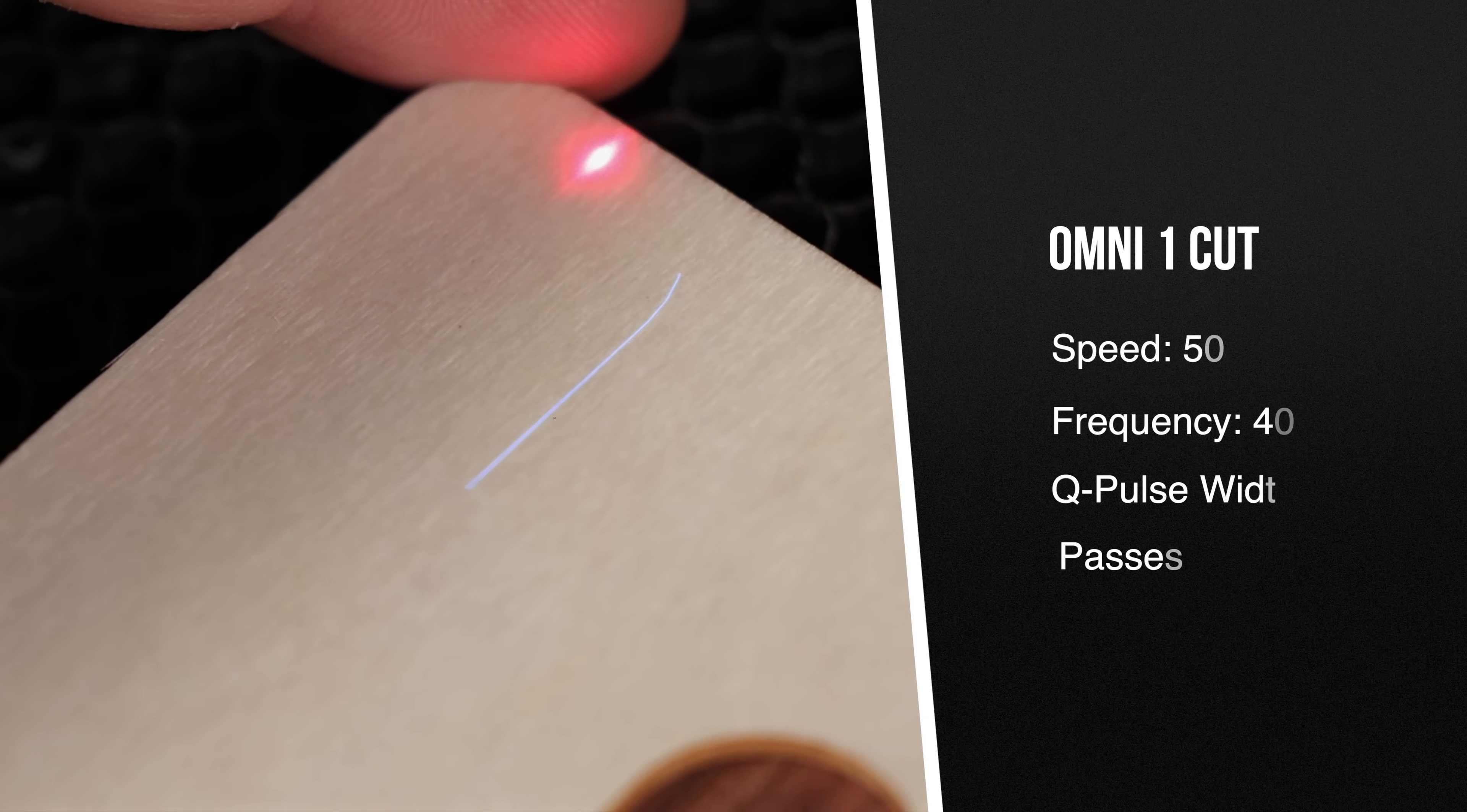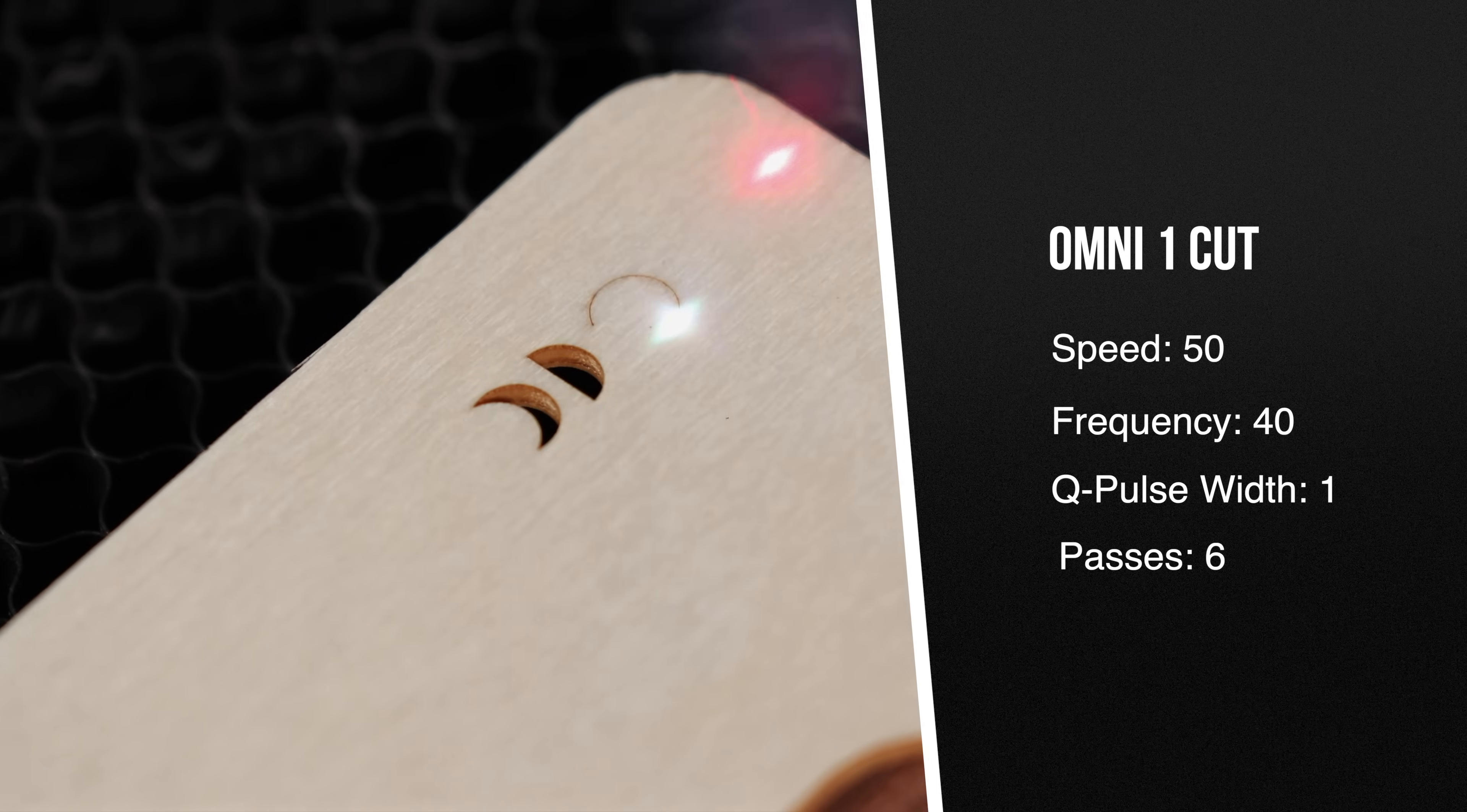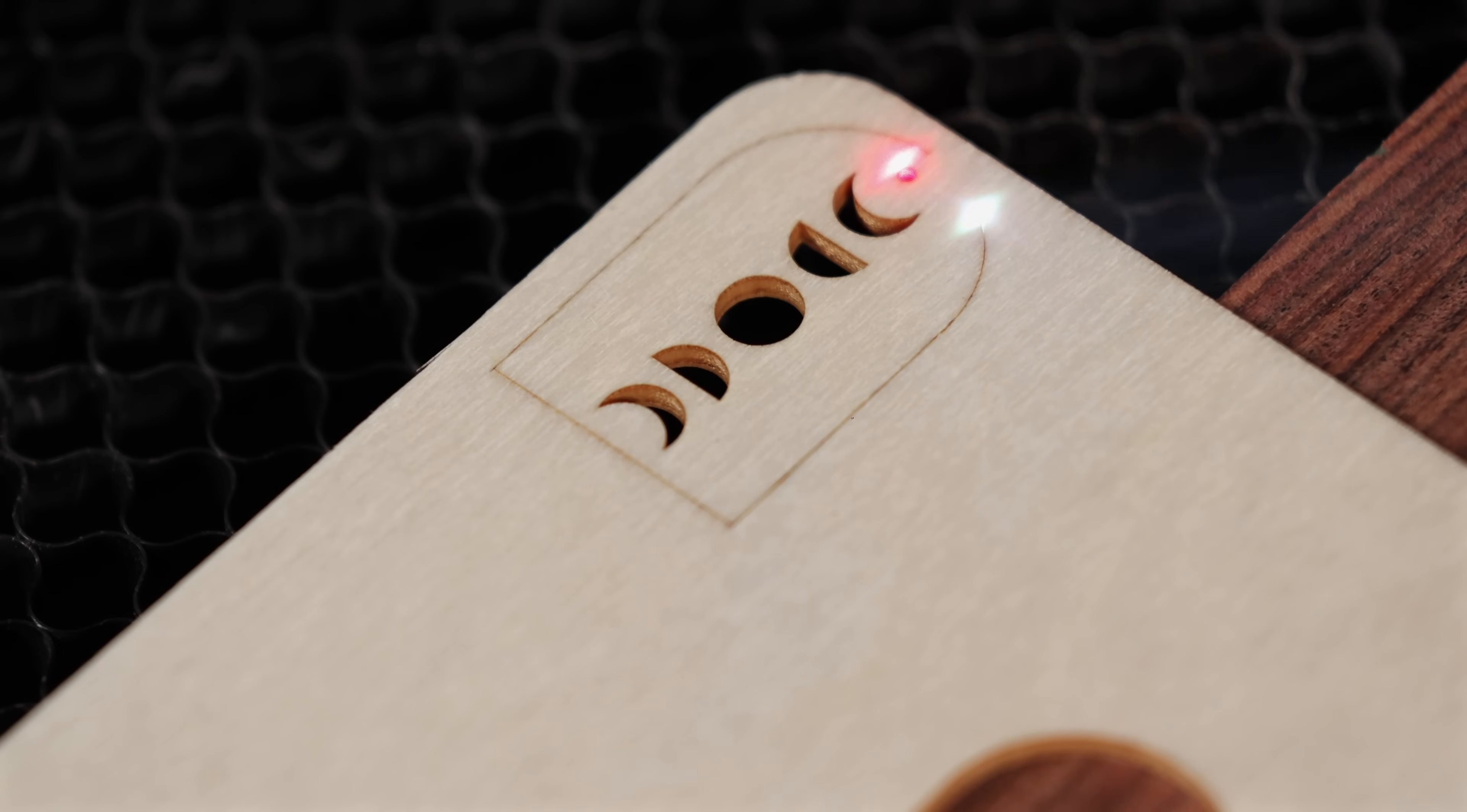We were definitely excited to try engraving glass, but the first time we tried wood, we were absolutely blown away. The UV light creates such a tiny dot size, and the line is so tight that at first we thought that nothing was happening and it wouldn't cut all the way through the base wood. But then, as we kept watching, we saw the pieces start to fall away. So satisfying.